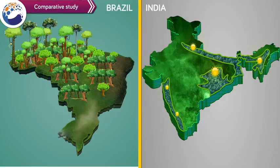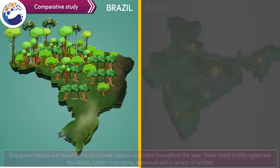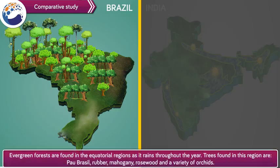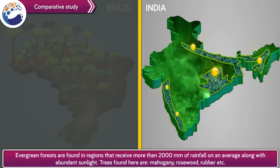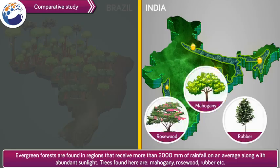Let us go through a comparative study of various types of vegetation found in Brazil and India. Brazil: Evergreen forests are found in the equatorial regions as it rains throughout the year. Trees found in this region are pau-brasil, rubber, mahogany, rosewood and a variety of orchids. India: Evergreen forests are found in regions that receive more than 2000 mm of rainfall on average along with abundant sunlight. Trees found here are mahogany, rosewood, rubber, etc.